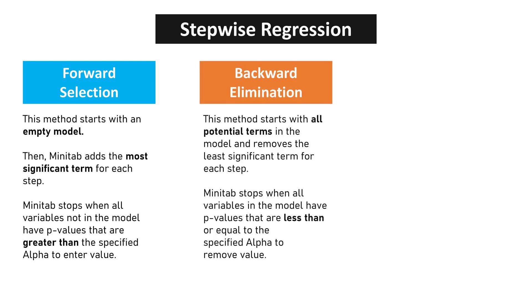Backward Elimination Method starts with all potential terms in the model and removes the least significant term for each step. Minitab stops when all variables in the model have p-values that are less than or equal to the specified alpha to remove value.